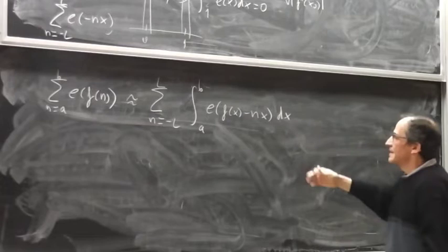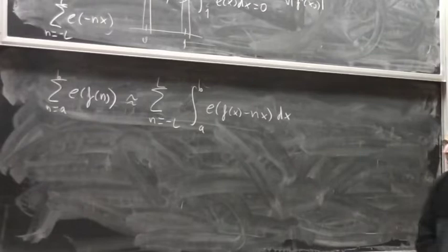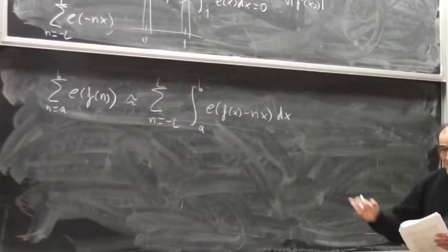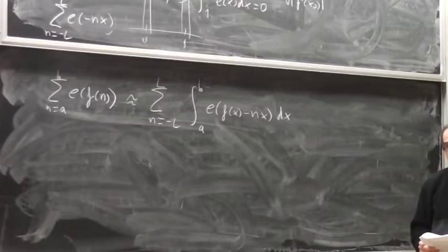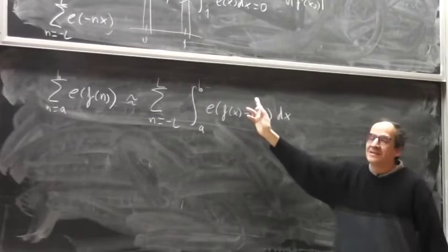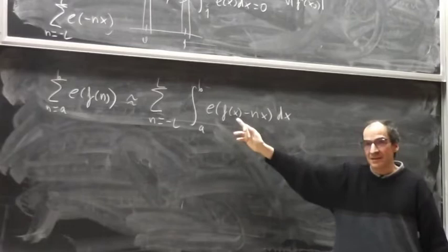Then you can write any exponential sum as a corresponding exponential integral plus probably some small remainder. Forgetting about the boundary, this is quite a good approximation, because for short intervals integration is almost the same as evaluation. Then: if n is much larger than the derivative of f, the linear model applies and the integral is small.